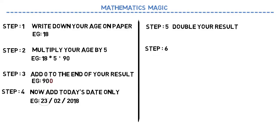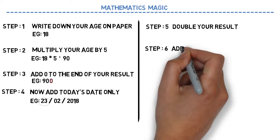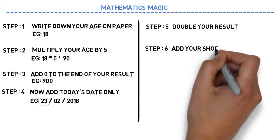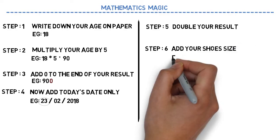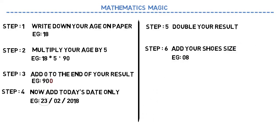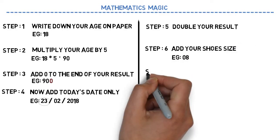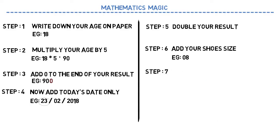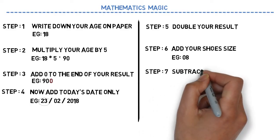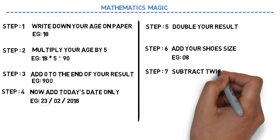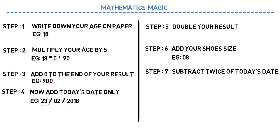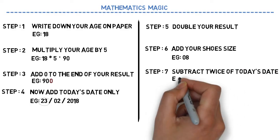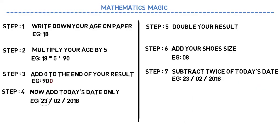In step 6, think about your shoe size and add it to your result. Let's say your shoe size is 8 — just add it to your result. In step 7, subtract twice today's date. As today's date is 23rd, you just need to subtract 46. Double of 23 is 46, so subtract 46 from it.